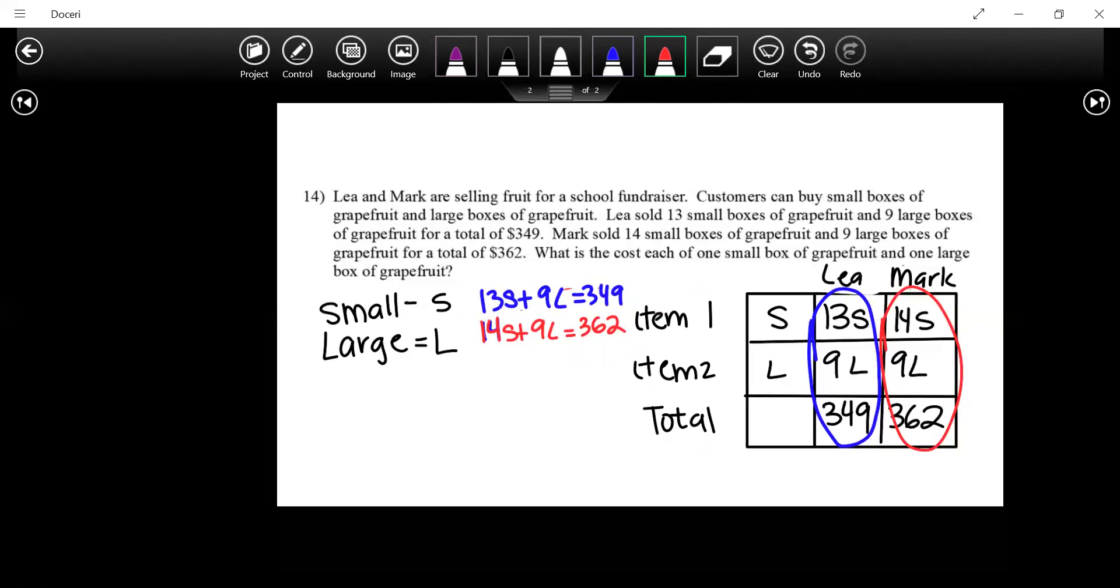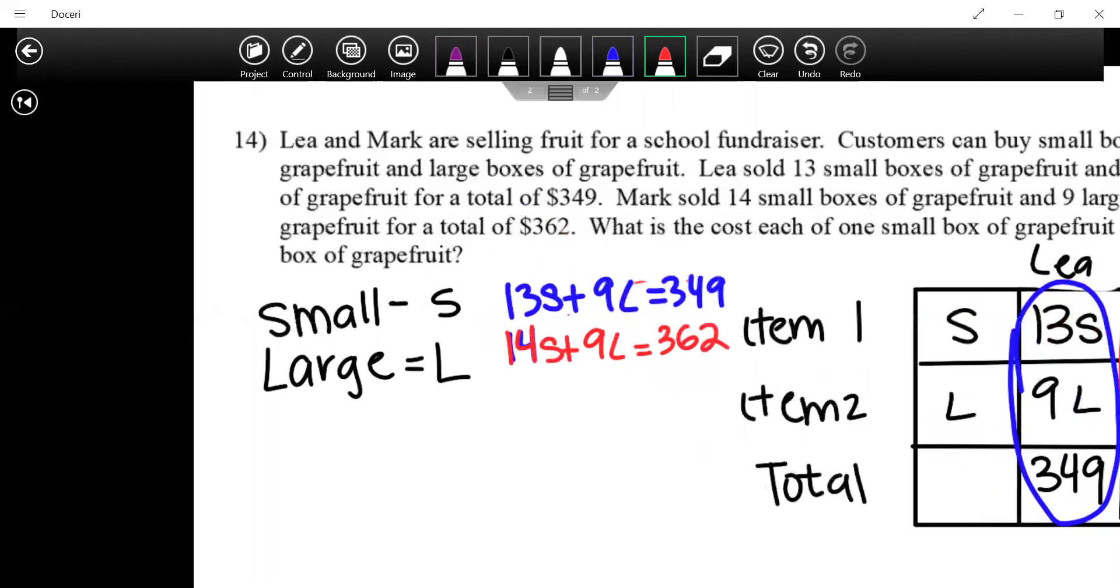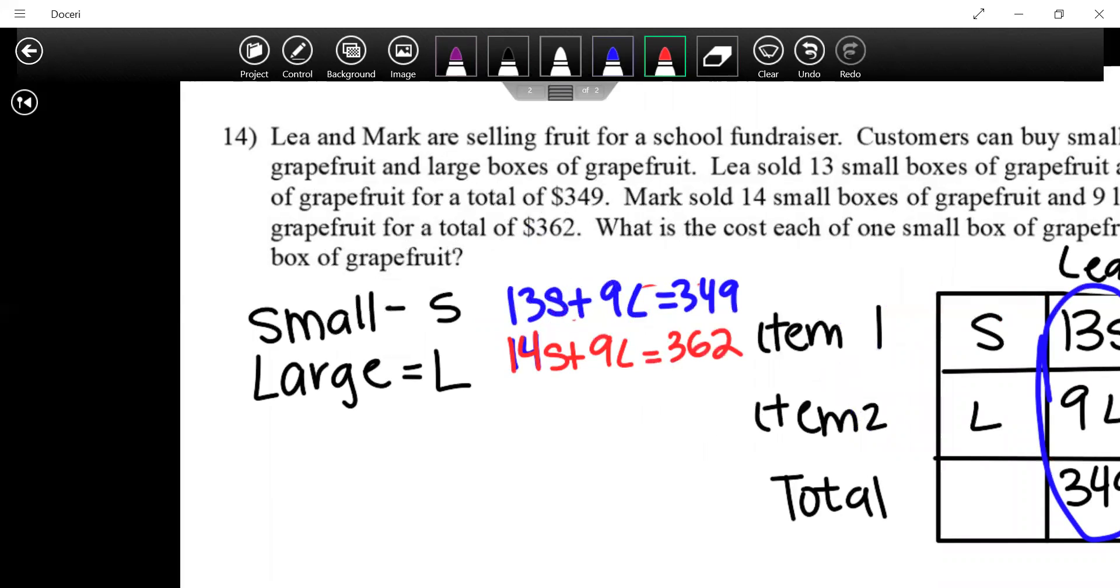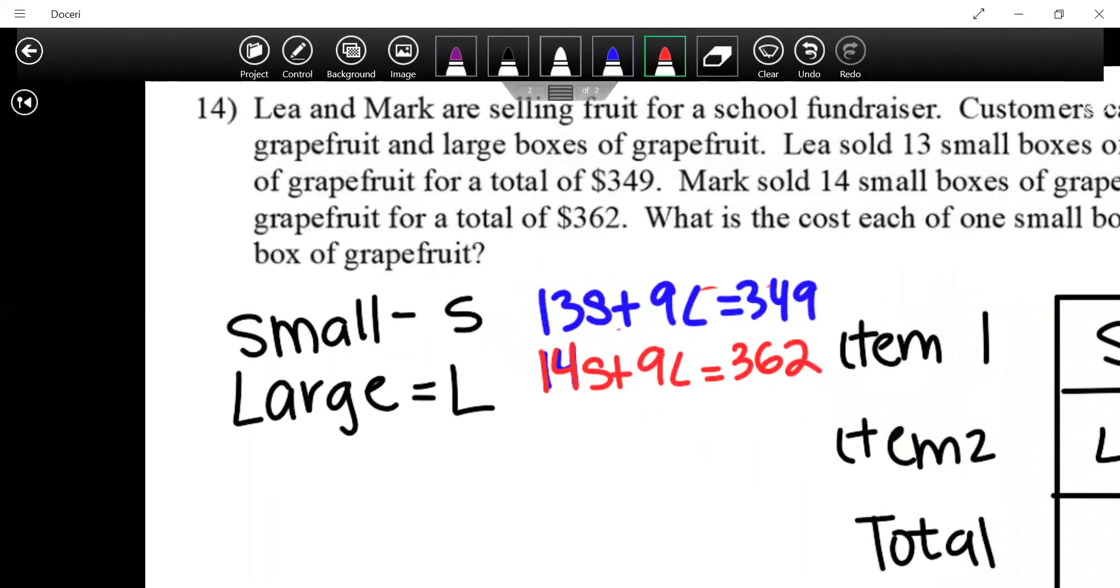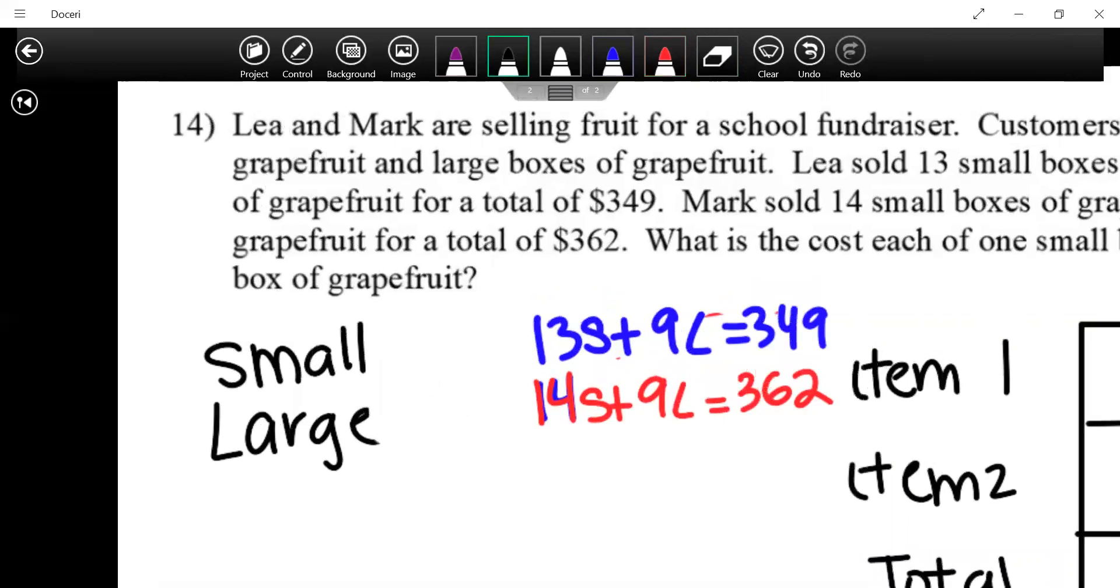Elimination. We've got to circle both of them, so we're going to use elimination on this. They're stacked already. Which term do I want to get rid of, the small or large? Large, right? They're already the same number, we just got to make one of them opposite. Now, what do you want me to get rid of, the blue or red? Blue. Is there a reason why? Bigger. That's fine with me. You can use your own discretion for this. Top one by negative. Negative 13S minus 9L.